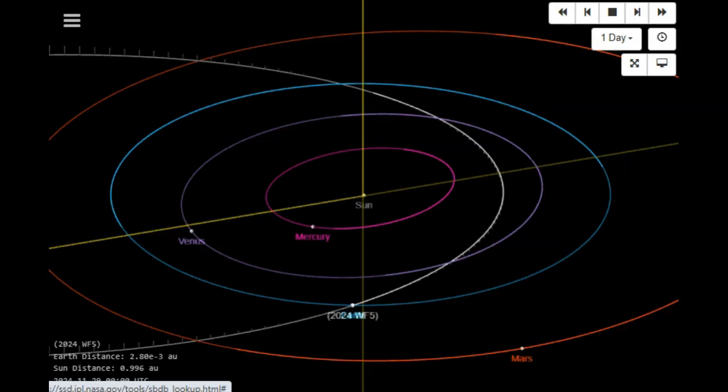So in summary, we have a space rock inbound flying between the Moon and Earth. Looks like it will be closer to the Moon than Earth, and that space rock is thought to be about 30 feet in diameter, moving extremely fast at 21.4 kilometers per second.